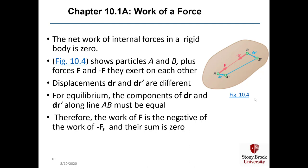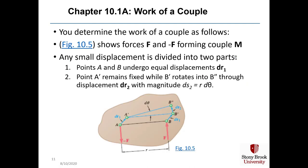Figure 10.4 shows particles A and B plus the forces F and minus F that they exert on each other. Displacements dr and dr prime are different — they go roughly in the same direction but have different magnitudes and slightly different angles. However, for equilibrium, the components of dr and dr prime along line AB must be equal, and therefore F times this component minus F times the same component will sum to zero.